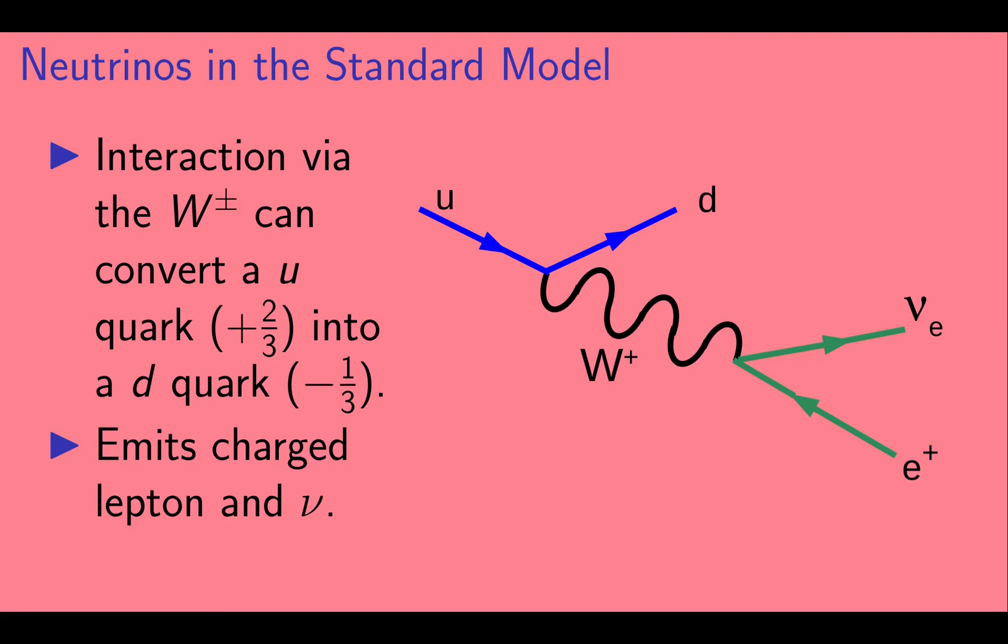The W can then disintegrate into an E plus and an electron neutrino, as shown before. So an up quark can turn into a down quark, a positron, and an electron neutrino.